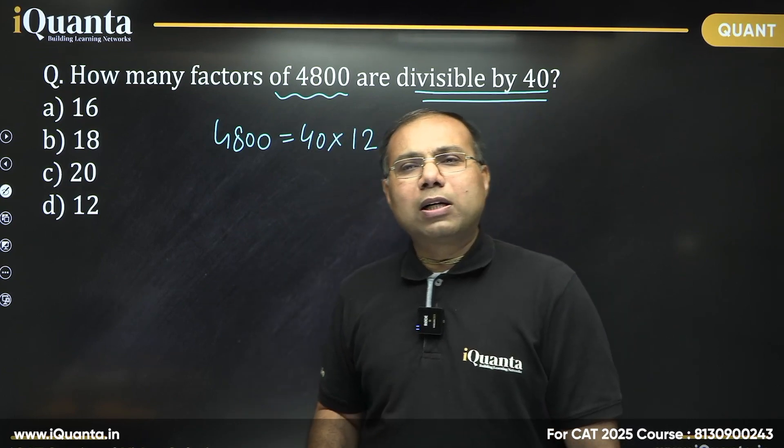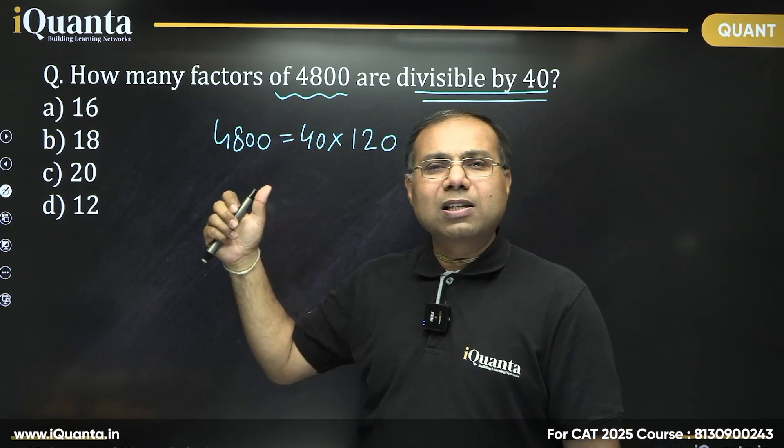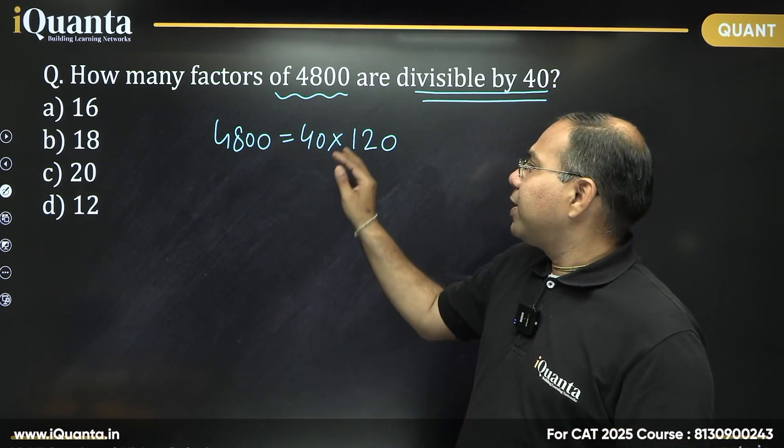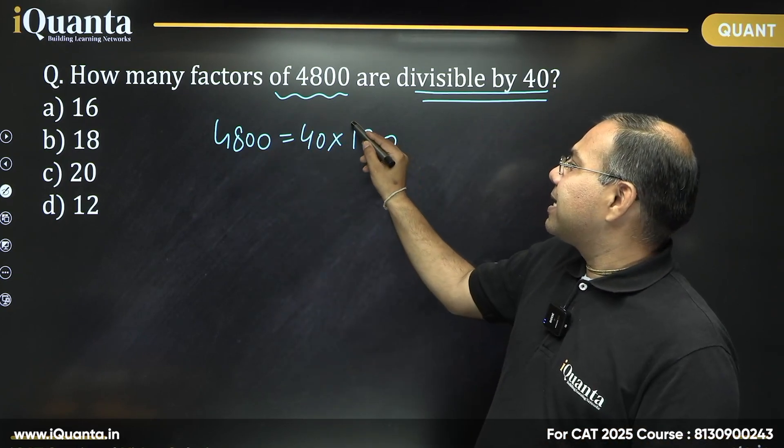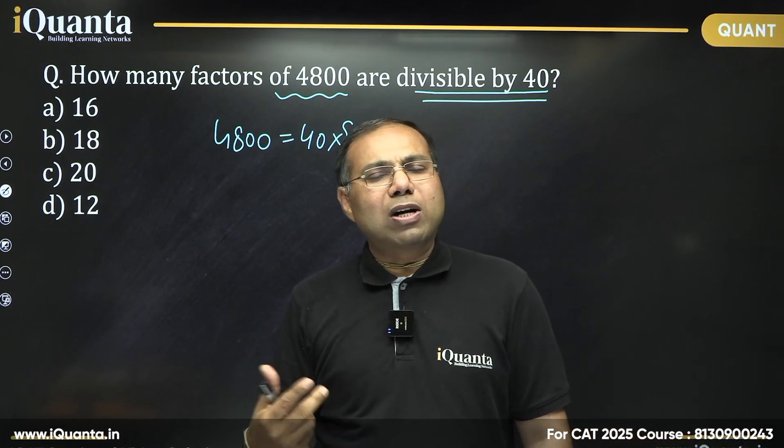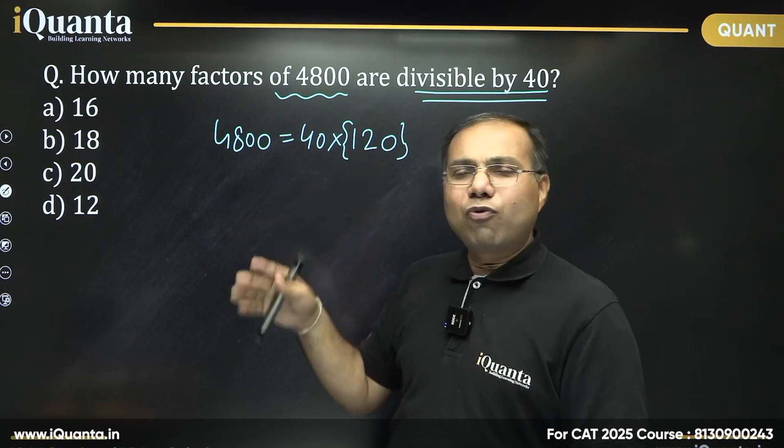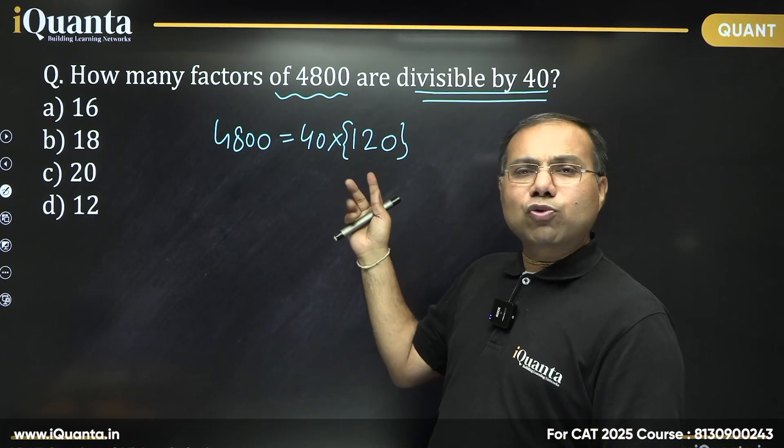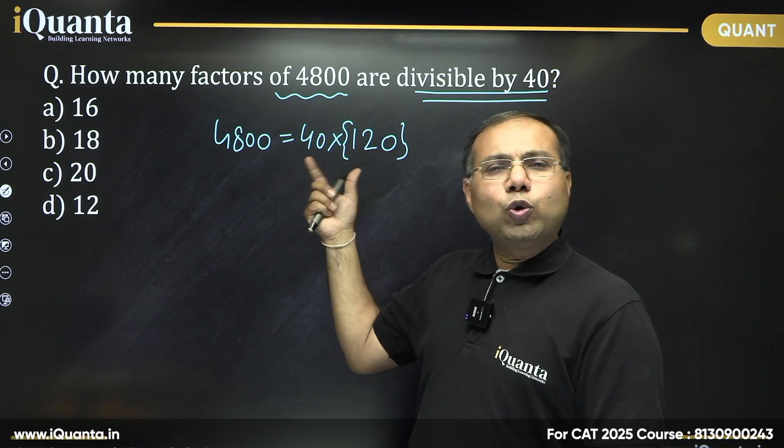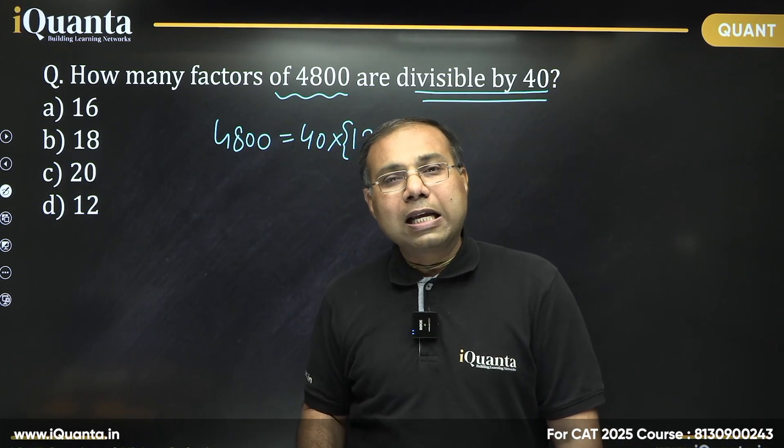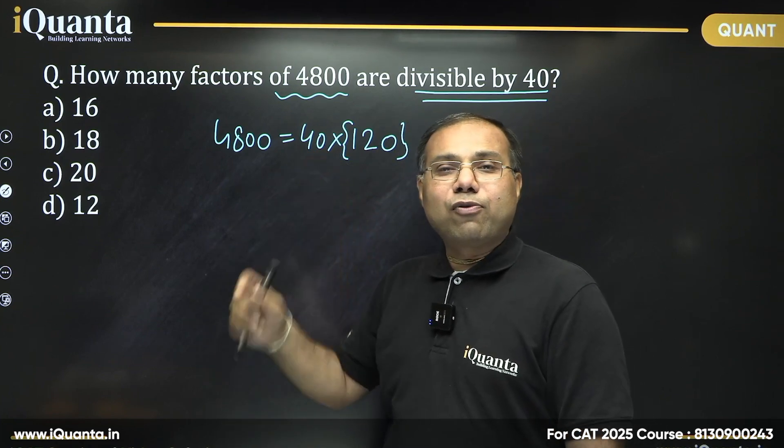So basically, I am looking for those factors, those many factors of this number which are multiples of 40. That means 40 should be kept aside. So I can say that I just need to calculate how many numbers divide 120 because whatever numbers divide 120 or whatever factors, whatever number of factors of 120 are there. So if I multiply those factors with 40, those numbers are going to be factors of 4800 and they are also multiples or they are divisible by 40. Isn't it?